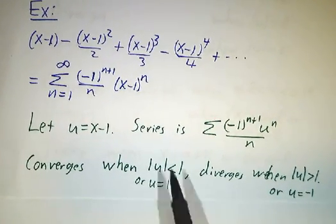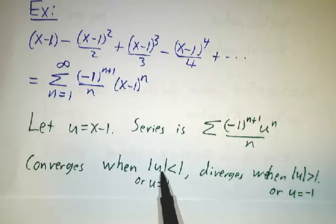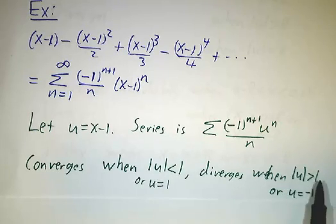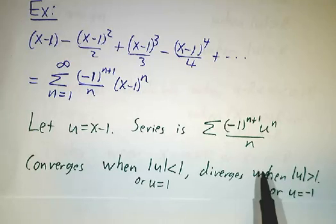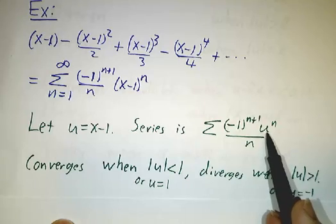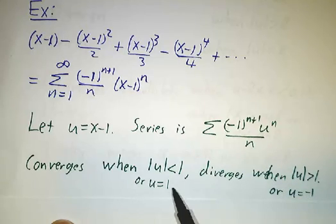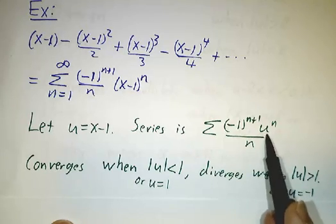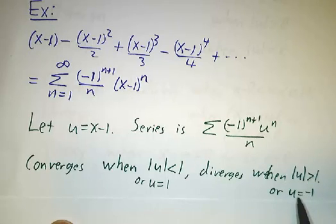And it converges whenever u is less than 1 in size. It diverges when u is bigger than 1 in size. And then you check the endpoints. You discover that when you plug in u equals 1, you get an alternating series and it converges. When u equals minus 1, we get a harmonic series and it diverges.